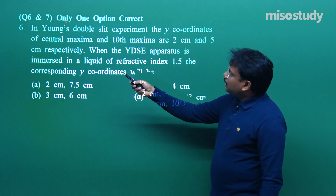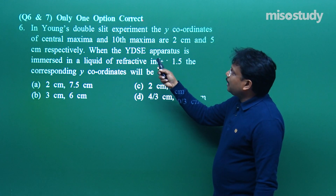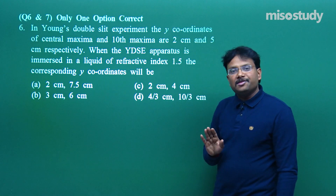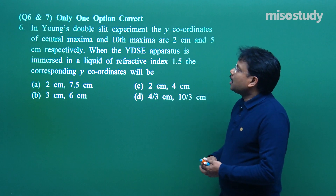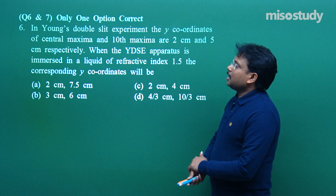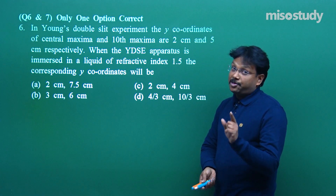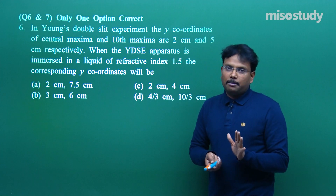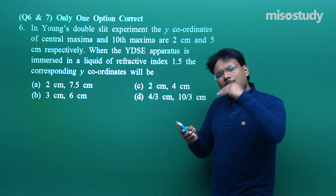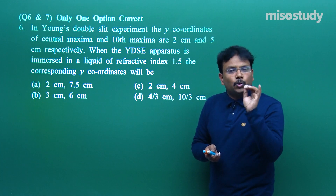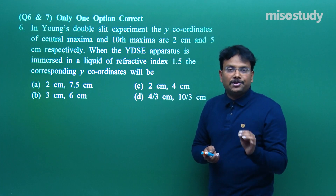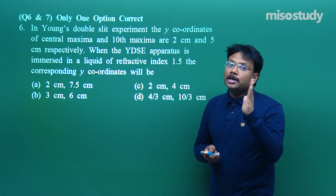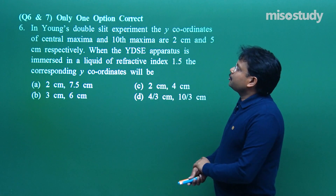The instructions for questions 6 and 7 are very clear and simple — only one option is correct. Once again, I would like to emphasize: in this entire chapter, if you find it difficult, forget the rest. But just one small experiment — YDSE — do it well. At least one full question will be perfectly clear to you.